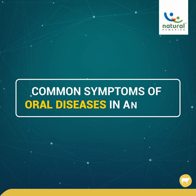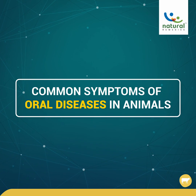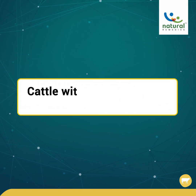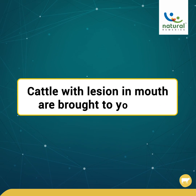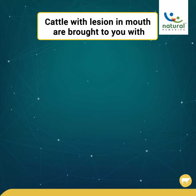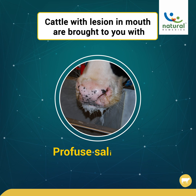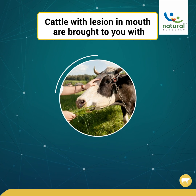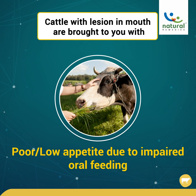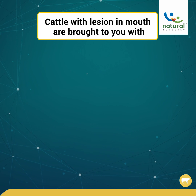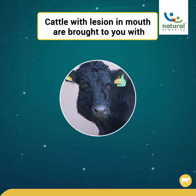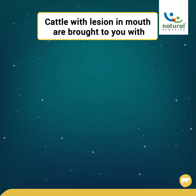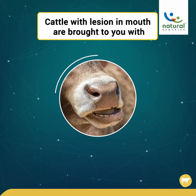Today we will talk of common symptoms of oral diseases in animals. Cattle with lesions in the mouth are brought to you with profuse salivation, poor or low appetite due to impaired oral feeding, cheek lesions, and halitosis.